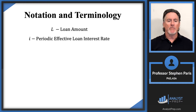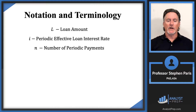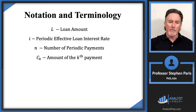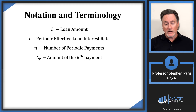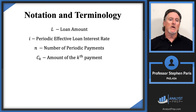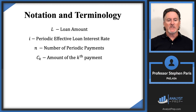n is going to represent the number of periodic payments on the loan. Cap C represents the amount of each payment. I'm not going to assume those payments are level — they might be different at different times — so I add a subscript k: cap C sub k is the amount of the kth payment.